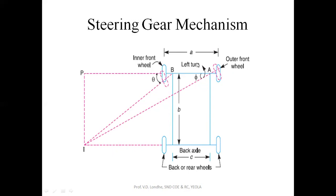So what is the exact steering system or steering mechanism? The center line of the rear axle and the center line of the front axle should meet at one common point. This point is called the instantaneous center.